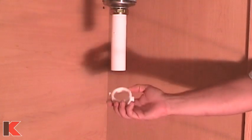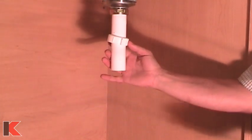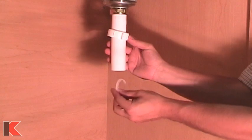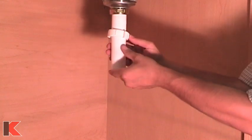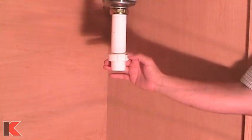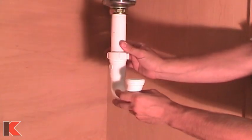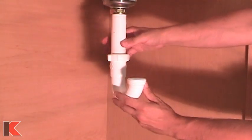Feed the slip joint nut up the tailpiece followed by the slip joint washer. Attach the high end of the J-bend to the tailpiece by hand tightening the slip joint nut and washer.